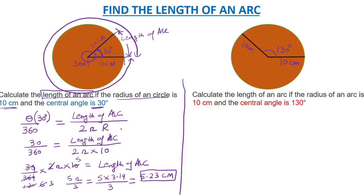Again, we have the same formula. Theta is 130 divided by 360 equals length of arc divided by 2πr. In this case, r is also 10, so 130/360 times 2π times 10 equals the length of the arc.